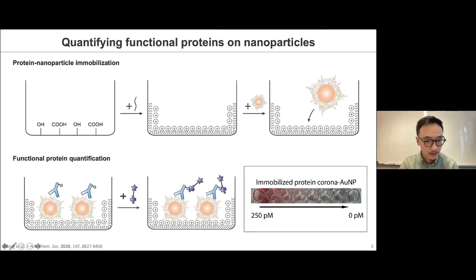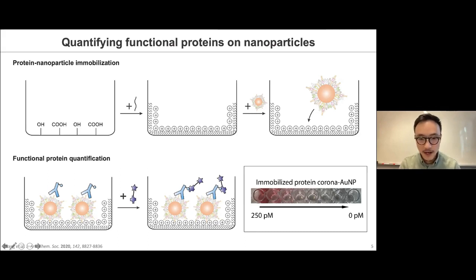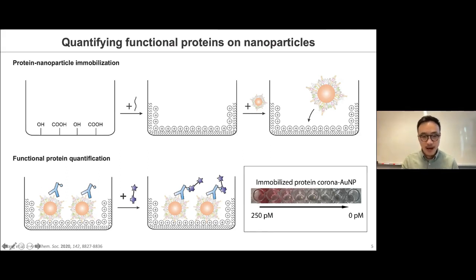After we immobilize these nanomaterials, we add primary antibodies and secondary antibodies, just like in a regular ELISA, and we also have a standard curve on a different well to tell us the amount of proteins that are functional on the surface of the particle. The reason we can determine functionality is that antibodies will only bind to proteins that are in their native structure with the binding site available. Through that, we have a way of looking at whether these proteins are accessible for binding.